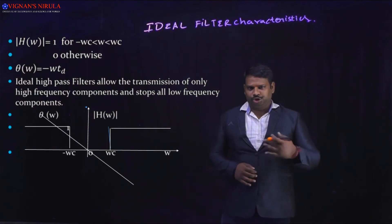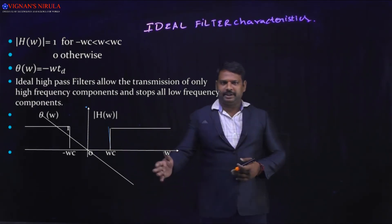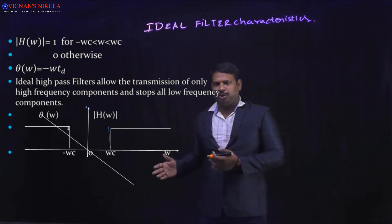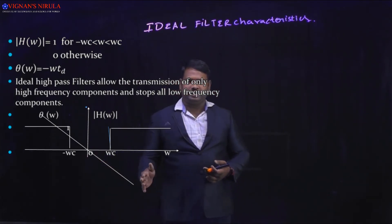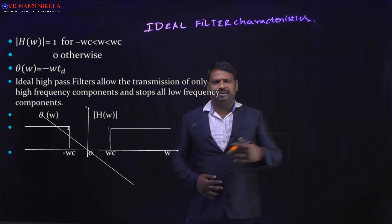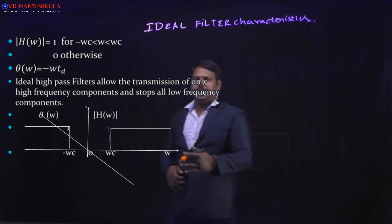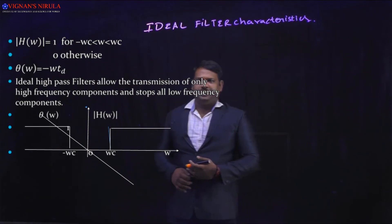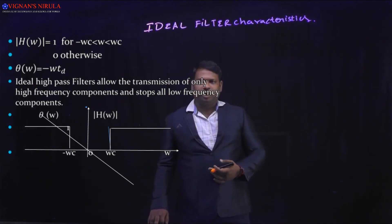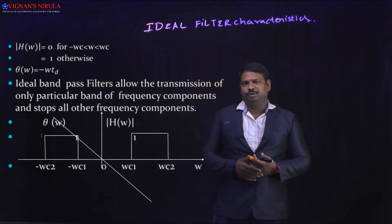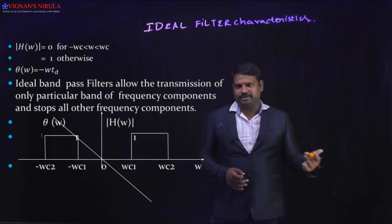Coming to the ideal high-pass filter, which allows the transmission of all high frequency components and stops all the low frequency components: |H(ω)| = 0 between −ω_c to +ω_c, and above ω_c all frequency components equal one, meaning it passes all high frequency components and attenuates the low frequency components. The linear phase spectrum is the same: θ(ω) = −ω·t_d. So |H(ω)| = 0 for −ω_c < ω < ω_c, and equals 1 otherwise.